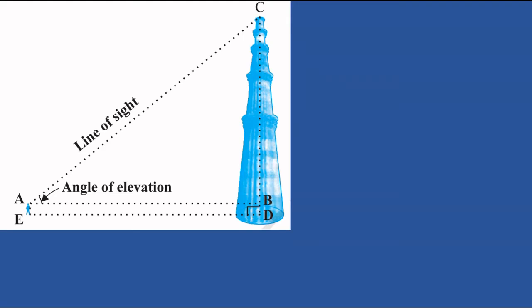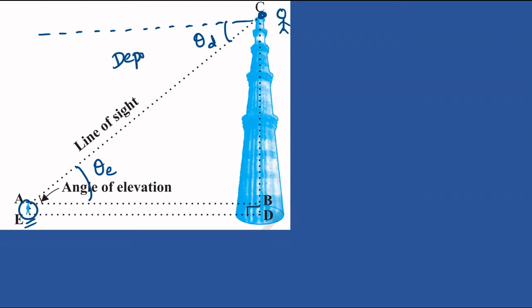This is a very important concept. We will solve all the problems. This is an angle theta — an angle of elevation. The observer is looking at the top, so that angle is called the angle of elevation. When the observer is seeing downwards, that angle is called the angle of depression. The angle of elevation is equal to the angle of depression. This is very important.